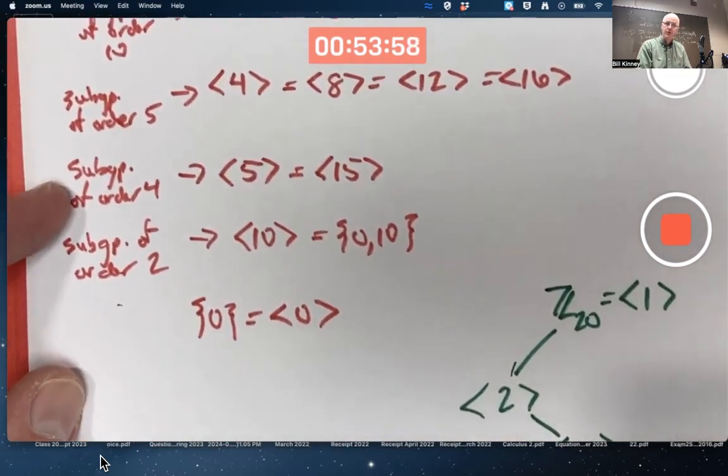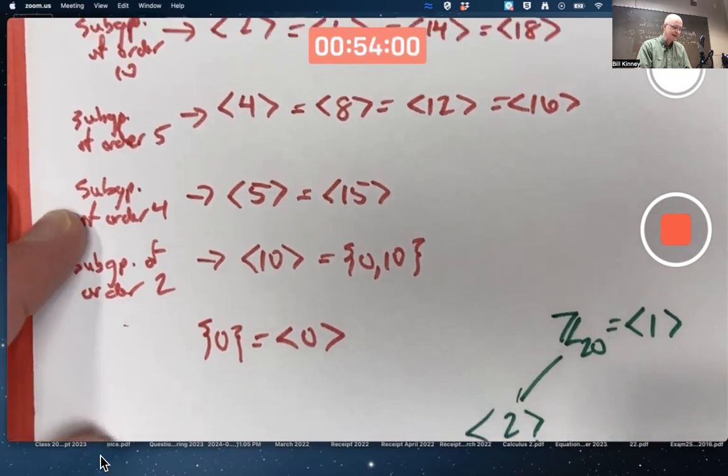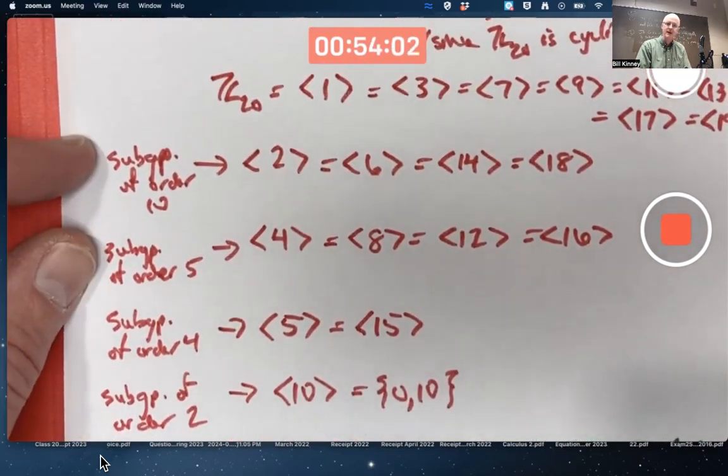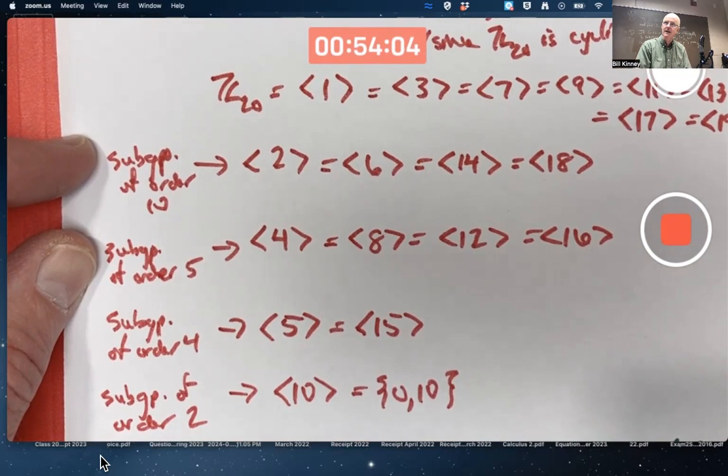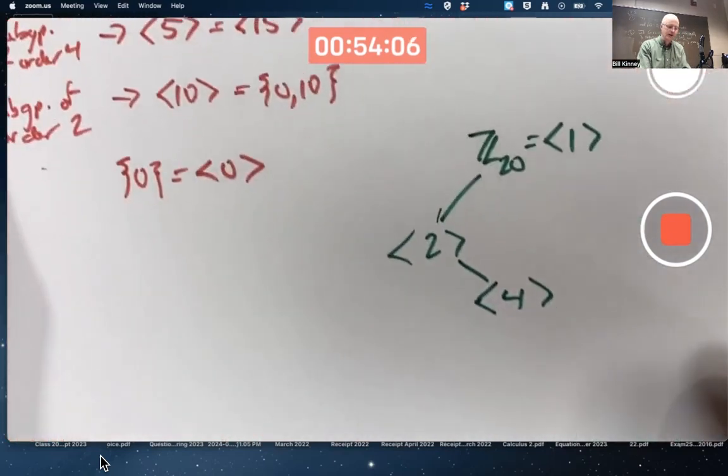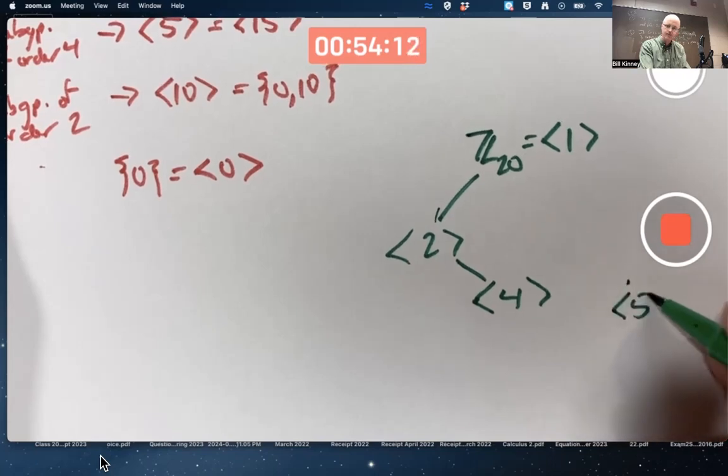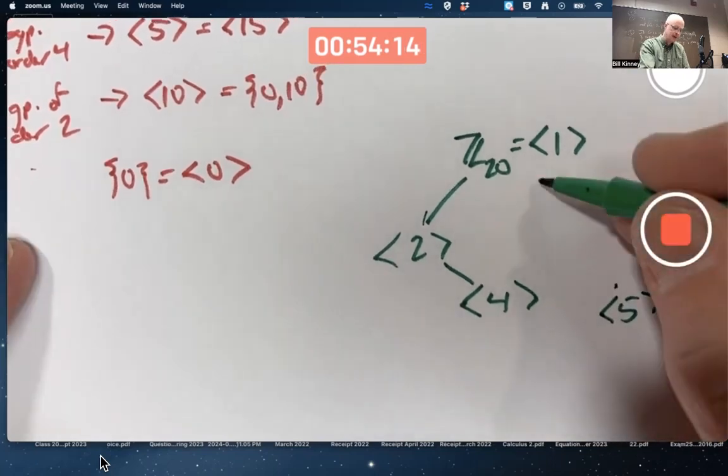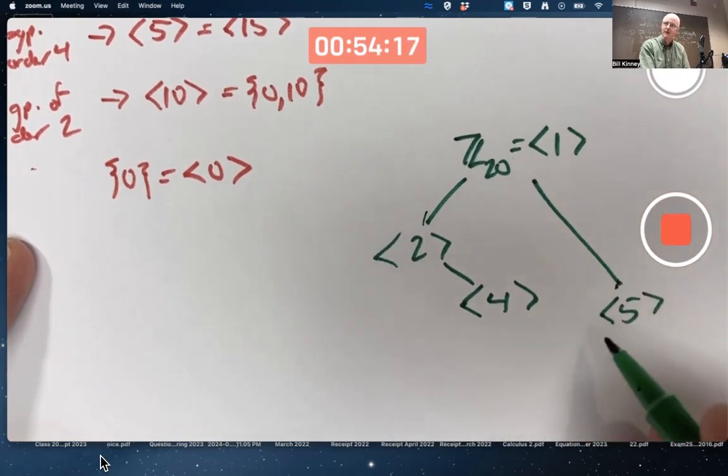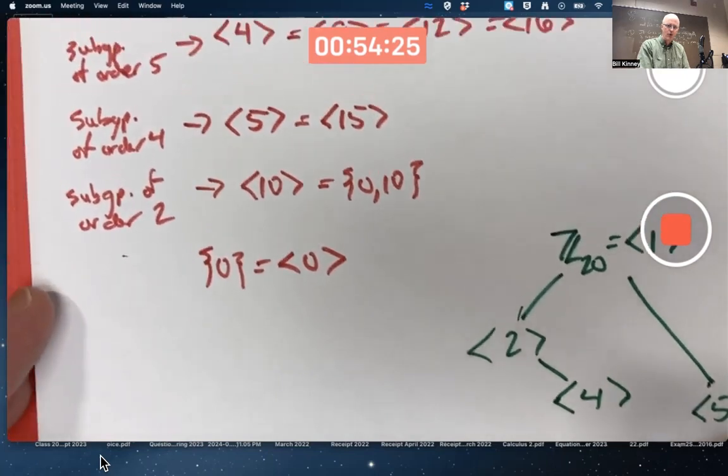Next, we have our subgroup of order 4. But remember that subgroup of order 4 is not a subgroup of either of these, because 4 does not divide 5 or 10. So I do not want to put it under these. I'd want to put it maybe over here, maybe a little lower than that one. And indicate that it's a subgroup of the entire group. But it's not a subgroup of this. So I don't want to draw a line there.